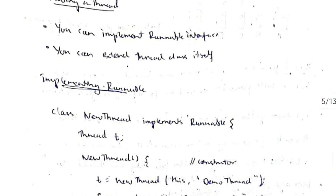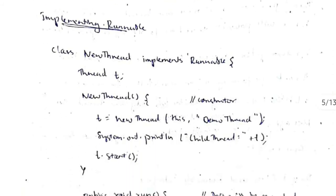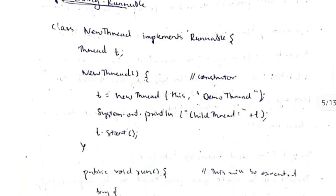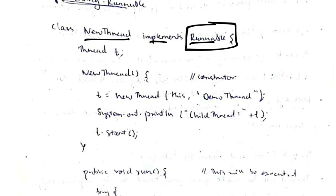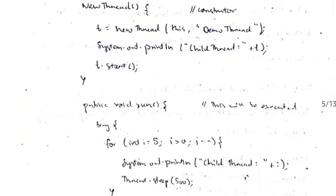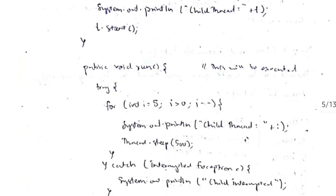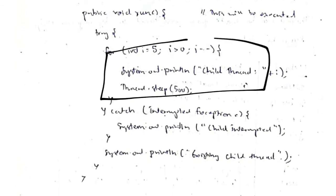There are two ways to create threads: implementing Runnable interface and extending the Thread class. For Runnable, we write 'class NewThread implements Runnable'. We then create an object and initialize it with the thread's name inside the constructor. Whatever the thread should do is defined in the void run function.